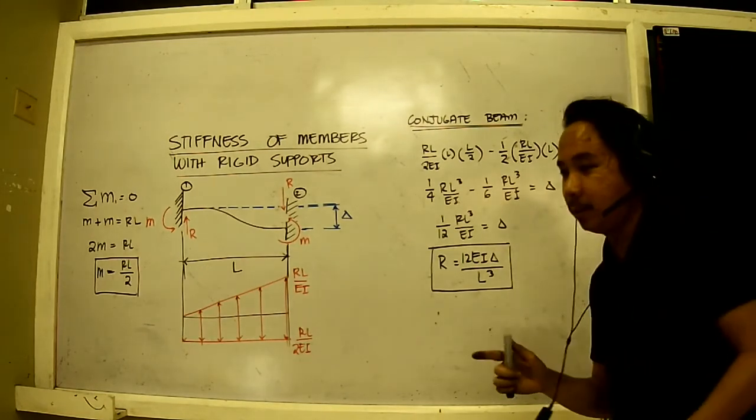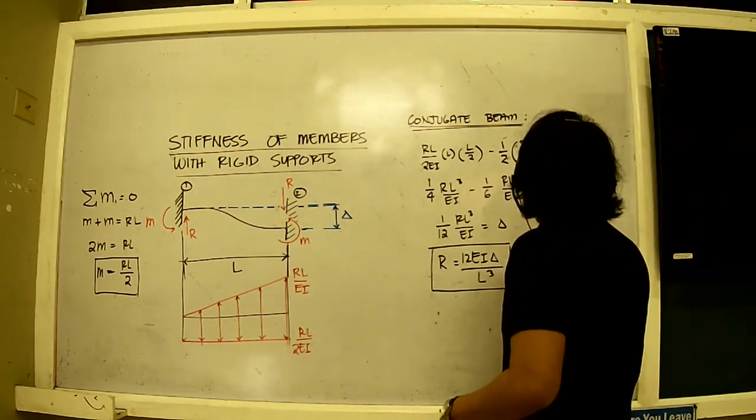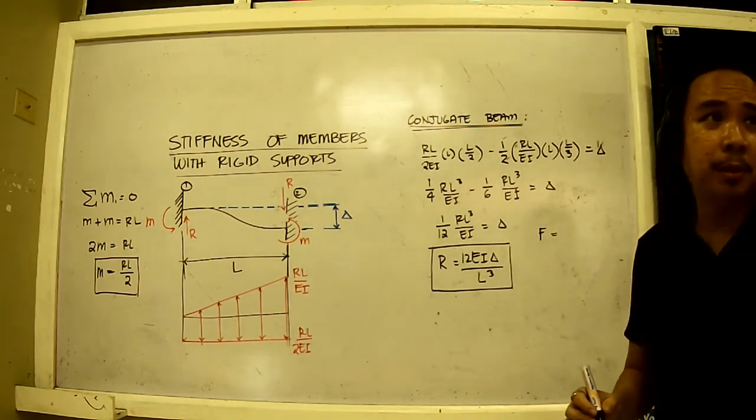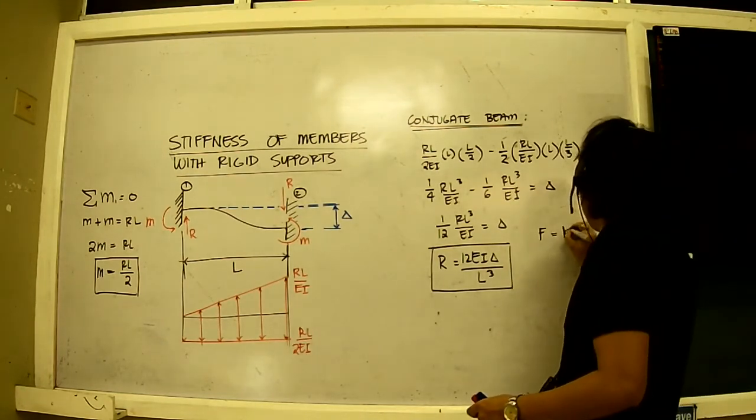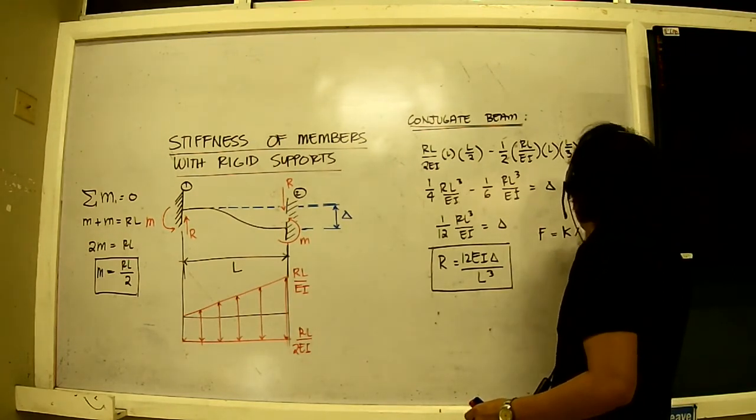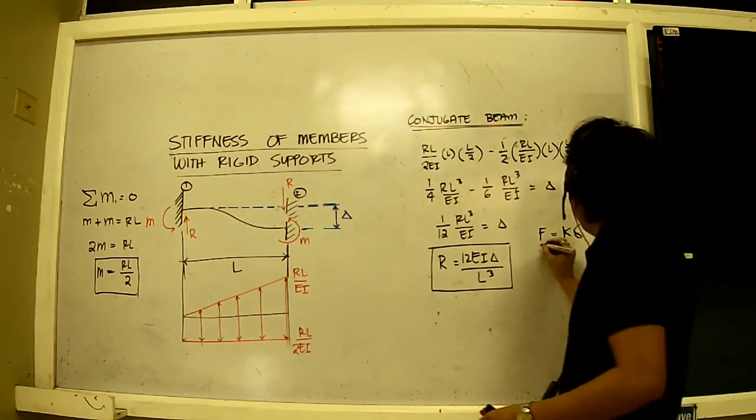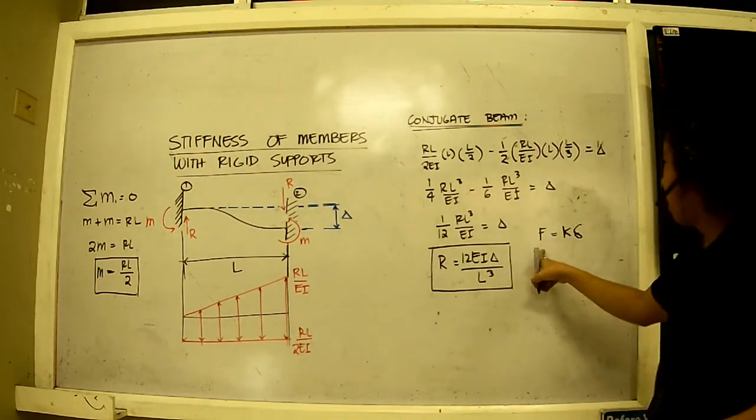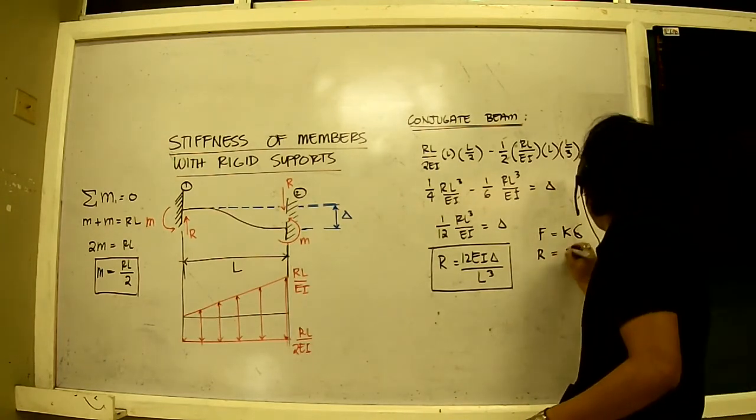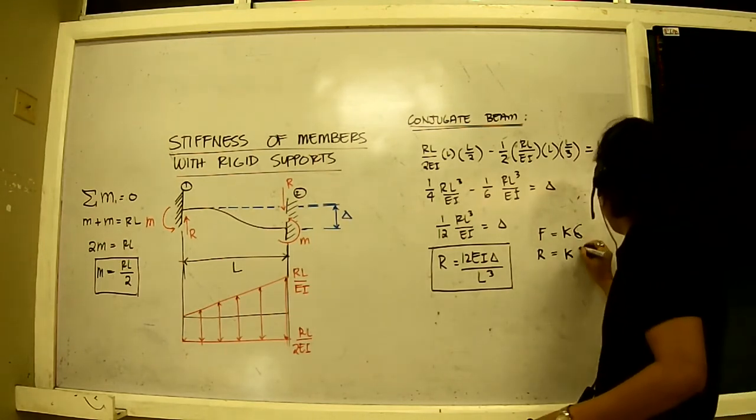This is just one step. The second step here is to actually invoke the fundamental definition of force, stiffness, and displacement. Now force is equal to stiffness times displacement. Now in this case, F is equal to R and K is something that we need to find, and this is equal to delta.